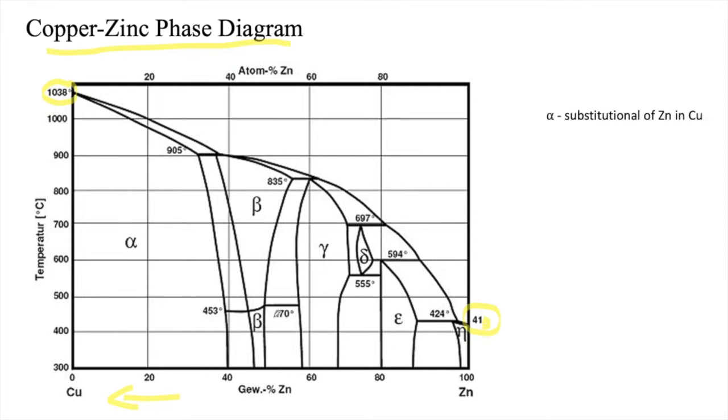The alpha terminal is a solid solution on crystal structure of copper FCC with zinc substitutionally dissolved up to the temperature of 905 to 453 degrees Celsius and the composition of 40% zinc.